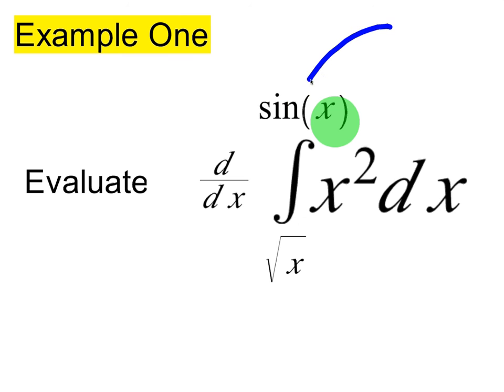You might be asking, when do I know it's Fundamental Theorem Part 2? It's when the limits are functions. If these were just numbers, that's Fundamental Theorem Part 1. If you take the derivative of the area under the curve, you're just going to get zero back because it's a constant number.